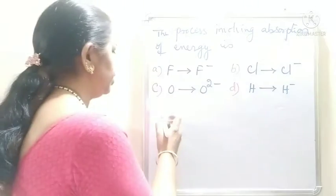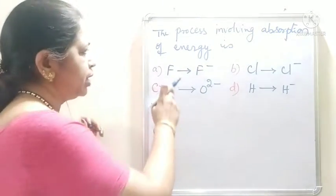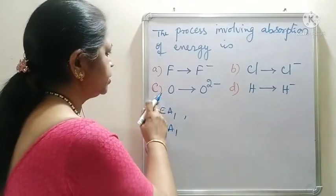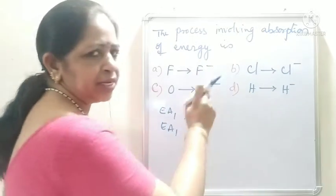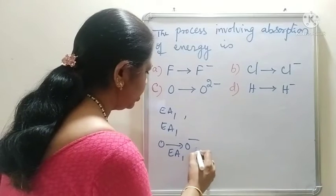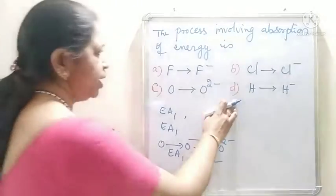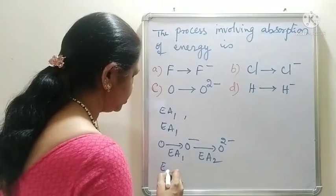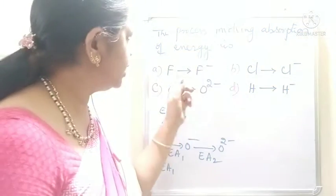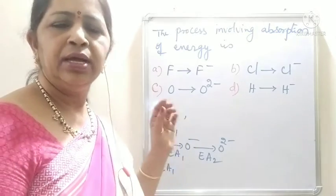In option A, the first electron affinity Ea1 is involved because only one electron is added to the neutral atom. In option B also, only one electron is added — Ea1 is involved. In option C, O is becoming O²⁻, meaning two electrons are added: O becoming O⁻ involves Ea1, and O⁻ becoming O²⁻ involves Ea2. In option D, H becoming H⁻ also involves the first electron affinity. The energy is released in processes A, B, and D — they do not involve absorption of energy.